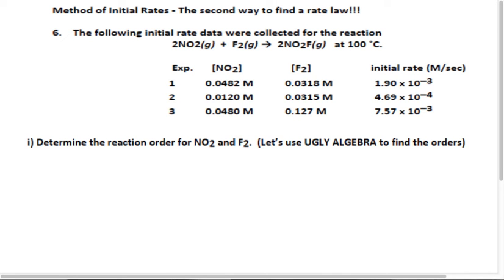These different experiments were completed and from this data we're going to find what that rate law actually is. The person that did this was very strategic in what concentrations they chose. This is based on keeping at least one of the reactants constant for two of the experiments. Because in doing so — keeping these constants and only having a change here — is going to produce a change in rate. Because we kept F constant, we now know that this rate changed strictly because of the concentration change in NO.